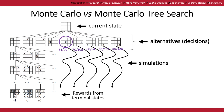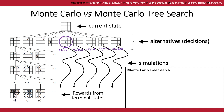Monte Carlo Tree Search improves this method by taking into account the results from previous simulations, building a search tree with that information, and using this search tree to improve the following simulations.